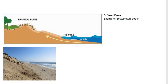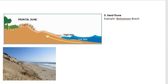Our final feature to identify and recognize is the sand dune. A sand dune is basically a hill or ridge of sand inland on the beach. Our example is the sand dunes on Bettystown Beach in County Meath.